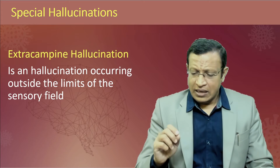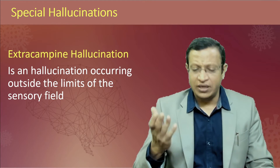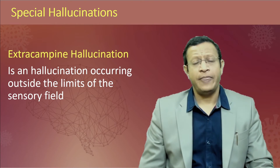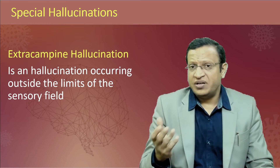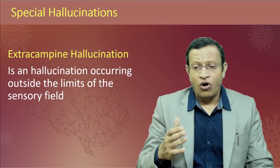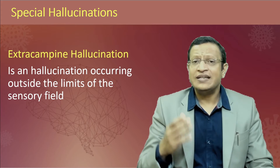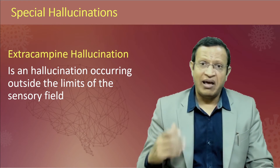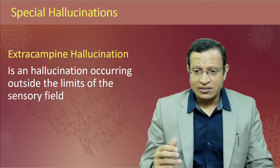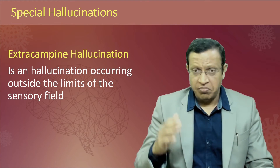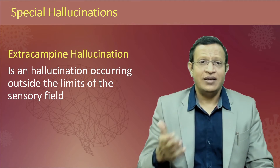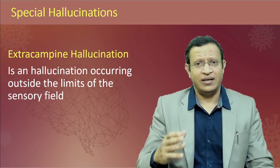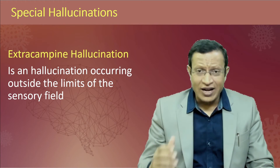Extracampine hallucination is a hallucination occurring outside the limit of the sensory field. This is commonly seen in complex partial seizure and sometimes in schizophrenia. For example, the patient is sitting in Bangalore and can hear voices of prosecutors sitting in Canada discussing with him — without any electronic aid. Or from Bangalore he can see people and what they are doing in New York — beyond the visual perception he is able to see. These are called extracampine hallucinations, commonly seen in auditory hallucination.